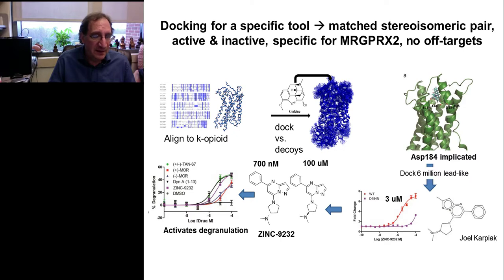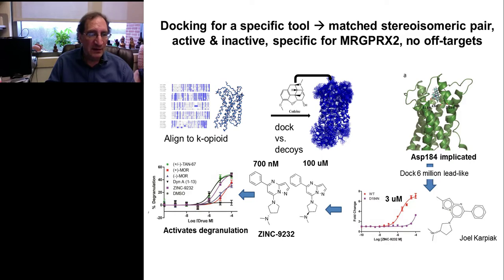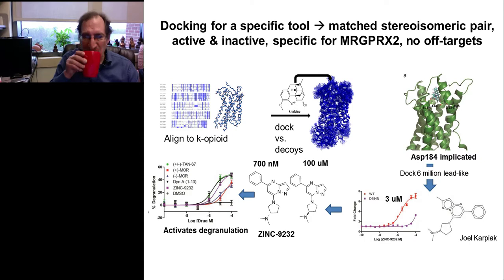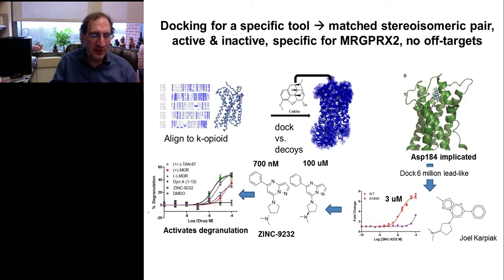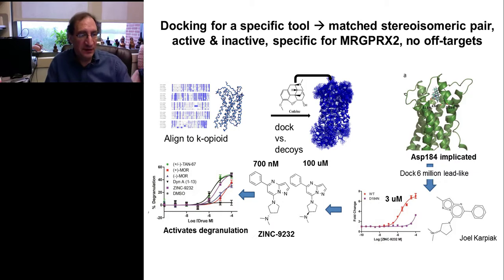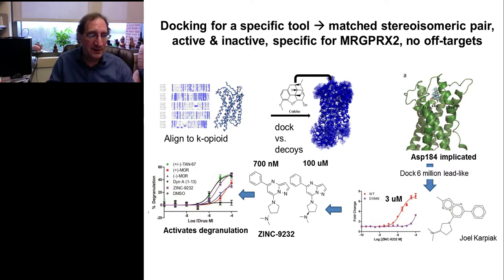A number of morphinans and morphinan-like compounds had potency for MRGPRX2, but none were selective and we were never able to drive potency into the nanomolar range needed for a useful tool compound. However, having a large number of compounds allowed us to use the same computational approach we'd used with GPR-68. Joel made a homology model for MRGPRX2, aligned to the kappa opioid receptor. With large numbers of compounds for docking plus decoys, this led to an optimized model for ligand recognition, verified by site-directed mutagenesis. We then docked 6 million lead-like compounds against the receptor, leading to initial micromolar potency compounds and ultimately sub-micromolar compounds — for example, ZINC-9232 — along with a matched inactive analog.